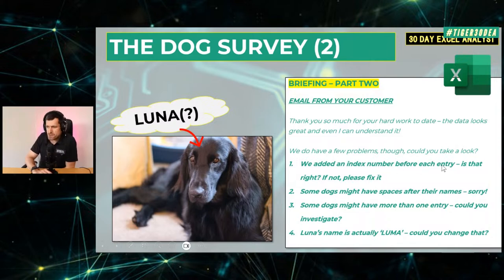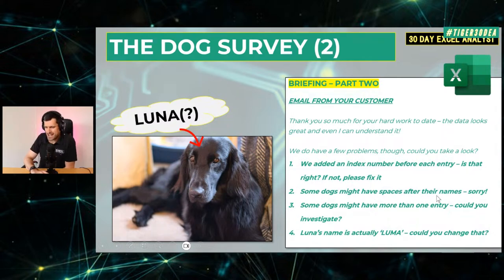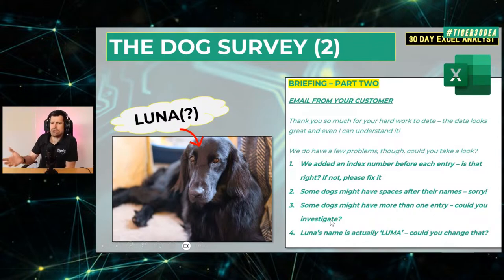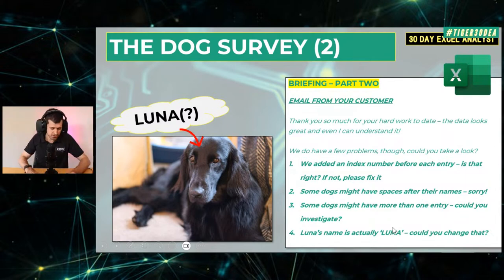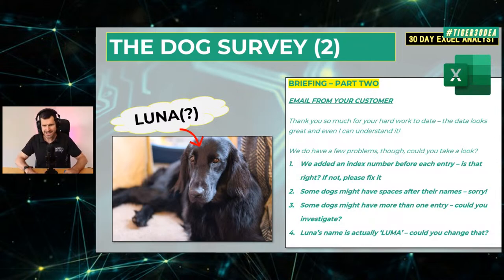The customer says: we added an index number before each entry — if that's not right, please fix it. Some dogs might have spaces after their names. Some dogs might have more than one entry — could you investigate? And Luna's name is actually Luma — could you change that? These might sound contrived, but I've seen many stranger things happen in Excel on real-world projects. So let's get into the Excel file and start dealing with these queries.